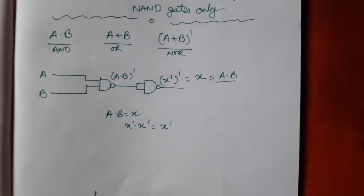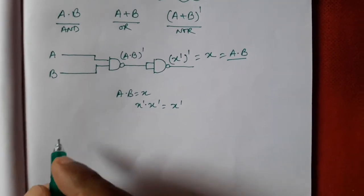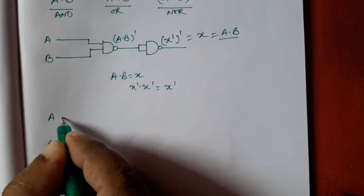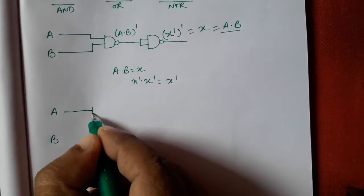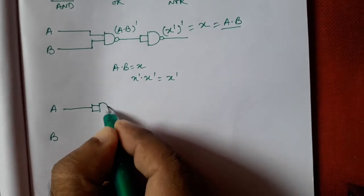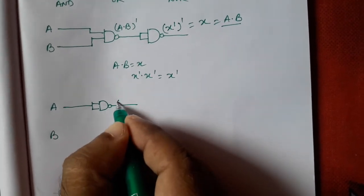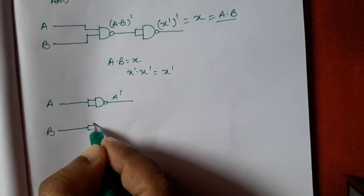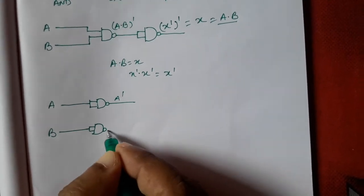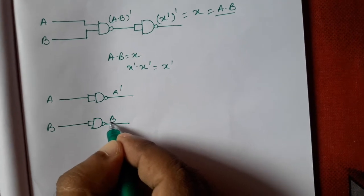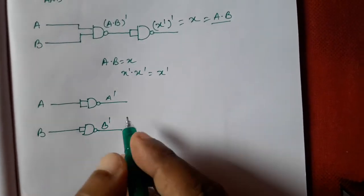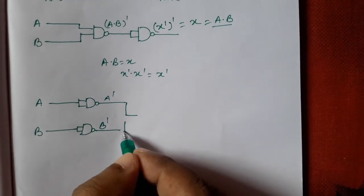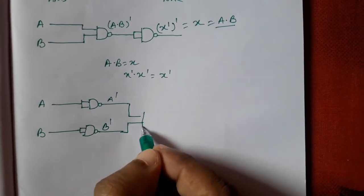Similarly, suppose we want to create OR gate. How we will create? We will take A and B. First we will convert our A into A dash. This is A dash. And this is also B dash using NAND gates. Now we will add one NAND gate again.